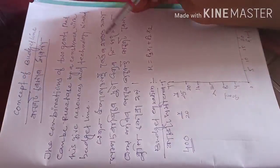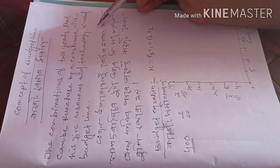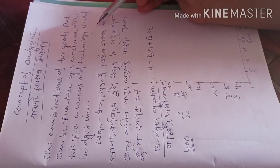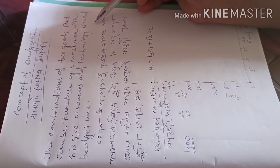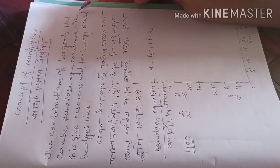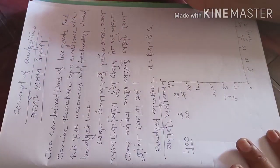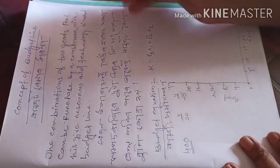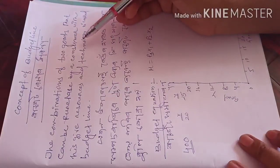The combination of two goods that can be purchased by a consumer with his given resources and technology is called the budget line.